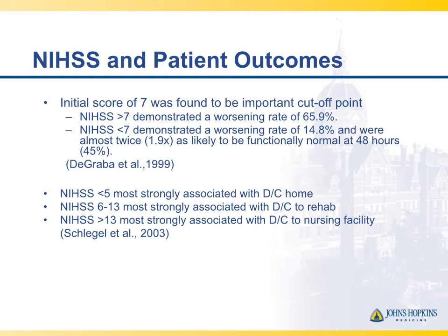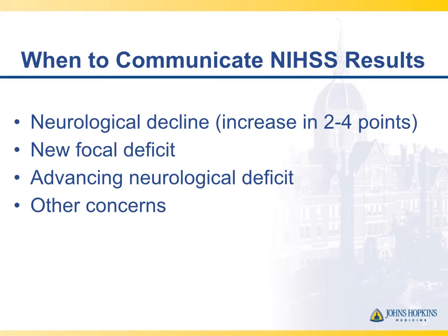Does the NIH Stroke Scale predict patient outcome? A study by Degraba et al. in 1999 showed that 7 was an important cut point — scores above 7 were 65% likely to exhibit worsening over hospitalization, probably because of larger strokes that swell and have potential to herniate. Schlegel et al. in 2003 showed that the NIH Stroke Scale was a good predictor of discharge disposition, helpful in early planning and counseling of families. It's also important to note that the scale is not linear — a two-point jump from 1 to 3 due to new hemiparesis is a big deal, while a similar increase from a baseline of 20 may simply represent examiner variability.